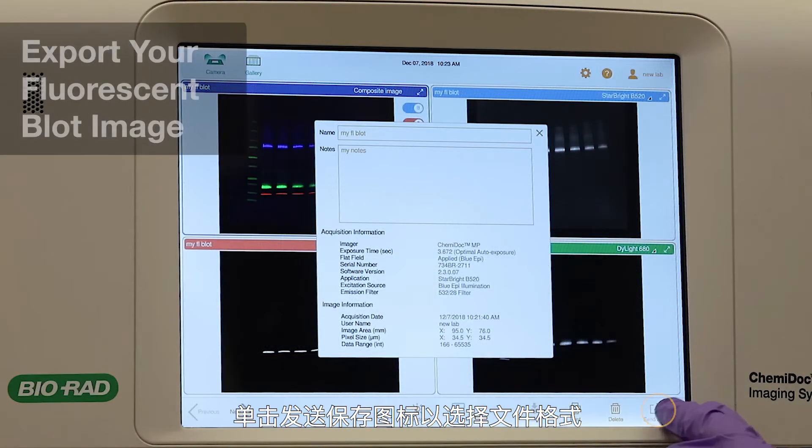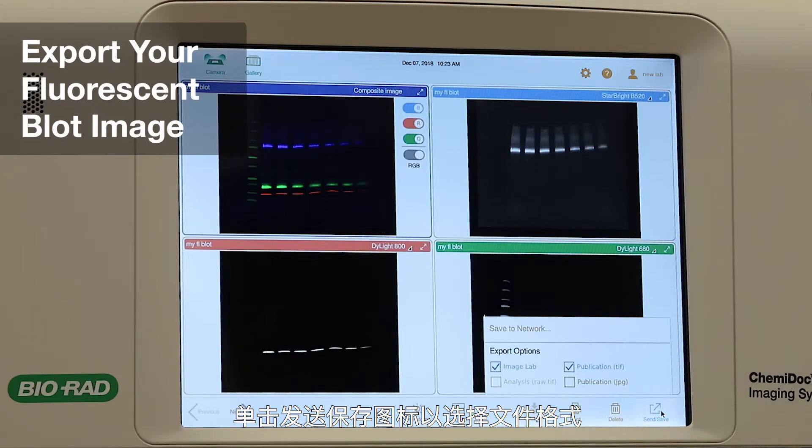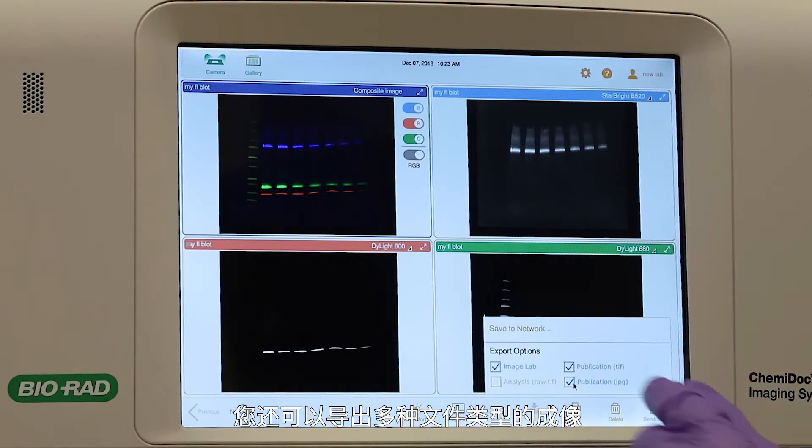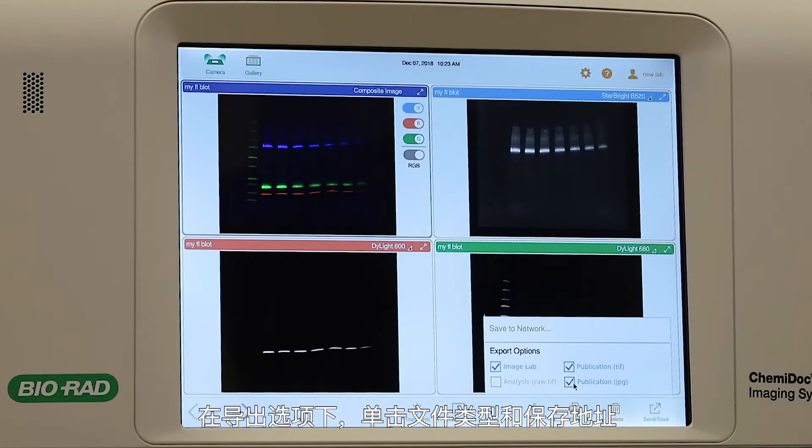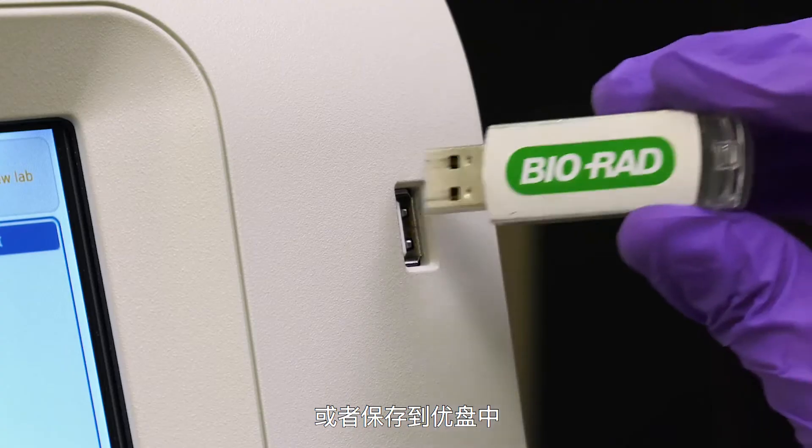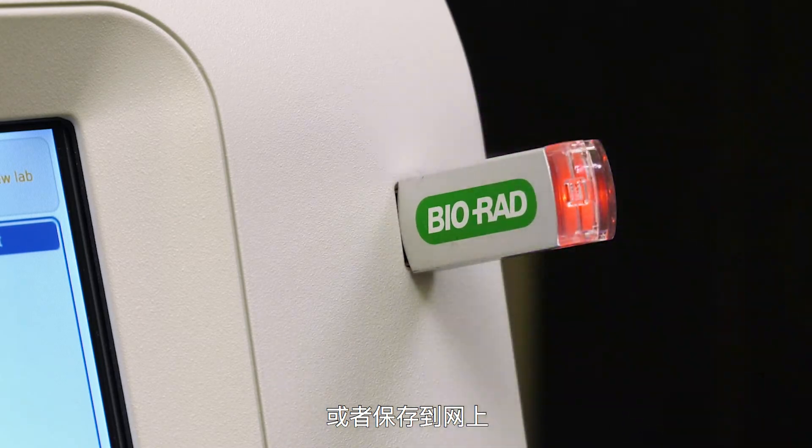Tap the Send Save icon to select the file format. You can also export images in multiple file types. Under Export Options, tap a file type and the destination, either saving to a USB drive or to a network.